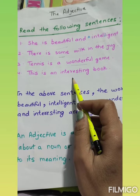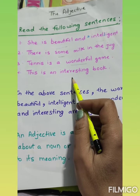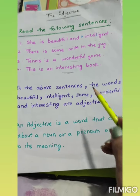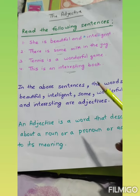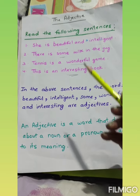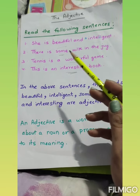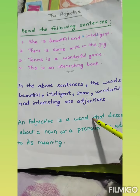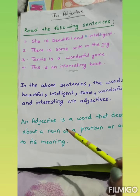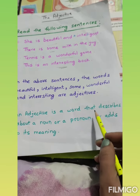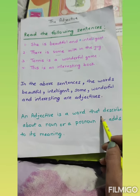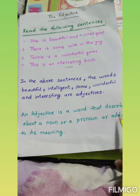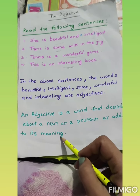This is an interesting book. Book kaisi hai? Interesting. To interesting kya hai? Adjective. So in these sentences, the words beautiful, intelligent, some, wonderful, interesting — ye sab adjectives hain. Adjective is a word that describes a noun or a pronoun or adds to its meaning.